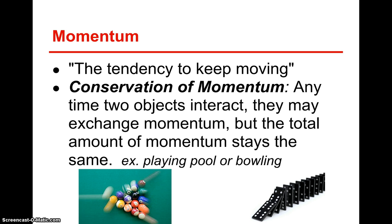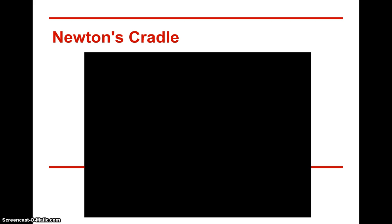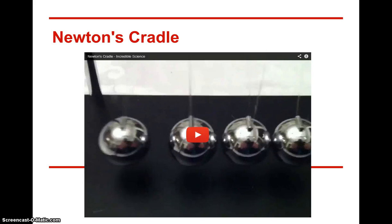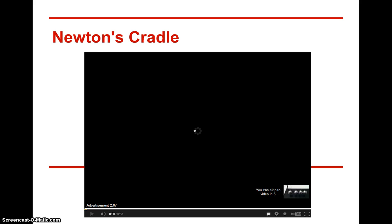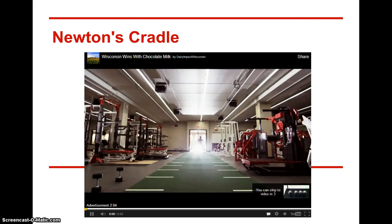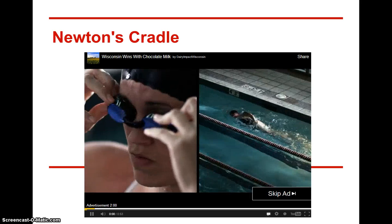Friction and momentum are two different ideas, but very much connected to one another. Friction is a lot of times going to be the tendency to stop an object because there's contact between surfaces or between fluid — air friction is a fluid friction. Momentum is the tendency for an object to want to keep moving unless something acts on it, which is very similar to Newton's first law of inertia.